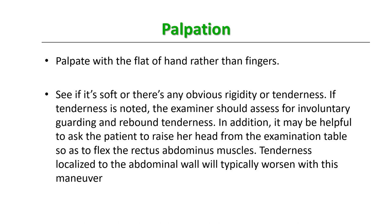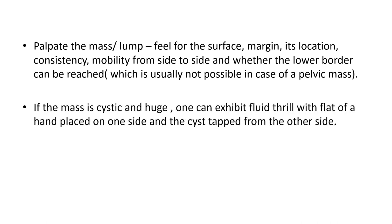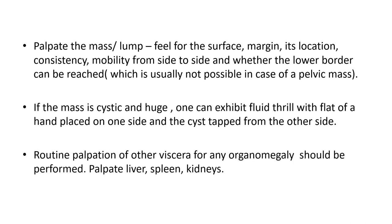Palpate the mass or lump — feel for the surface, whether it is smooth, the margins, look for boundaries all around, note in which quadrant of the abdomen it is located. Feel for the consistency — cystic, cystic-to-firm, firm-to-hard — and the mobility from side to side; whether the lower pole can be reached is usually not possible in cases of a pelvic mass. If the mass is cystic and huge, one can elicit a fluid thrill. Do not miss routine palpation of other viscera — liver, spleen, and kidneys — for any organomegaly.